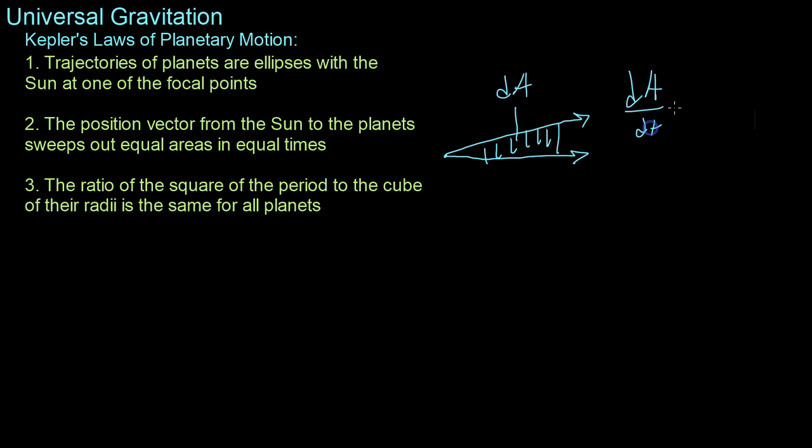And what the second law states is basically that the change in this area over time is constant. So dA dt equals k. Now why is that? Well, we have to look at the properties of this planetary motion.